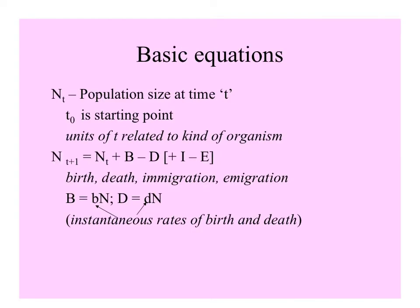The basic equations for population growth are simple. Big N is the number of individuals in a population, subscript t at time t, with t-sub-zero as the starting point. The units of time are related to the kind of organism involved — it could be hours, days, or years. So N at time t+1, the next time interval, is equal to the initial population size N, plus the number of births B, minus D, the number of deaths.